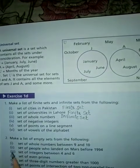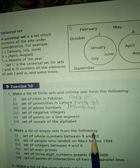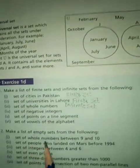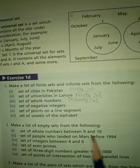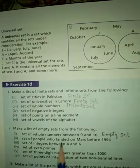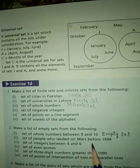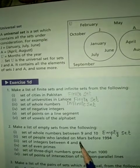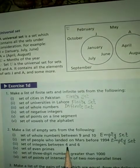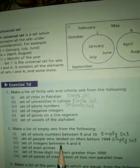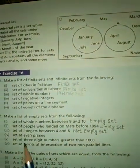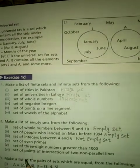Question 2: Make a list of empty sets from the following۔ Empty sets وہ ہیں جن میں کوئی element نہ ہو۔ 'Set of whole numbers between 9 and 10' — 9 اور 10 کے درمیان کوئی whole number نہیں، تو یہ empty set ہے۔ 'Set of people who landed on Mars before 1994' — کوئی نہیں گیا، تو empty set ہے۔ 'Set of integers between 4 and 6' — 5 آتا ہے، تو یہ empty set نہیں ہے۔ باقی 3 parts آپ خود solve کریں۔